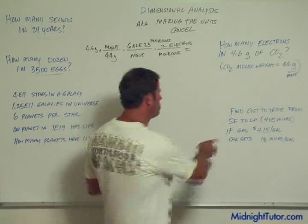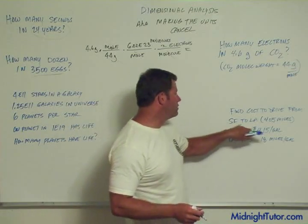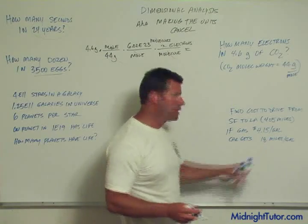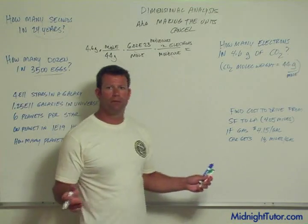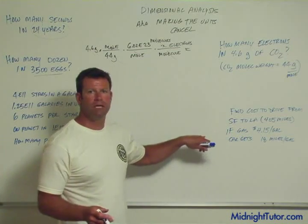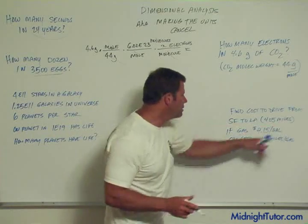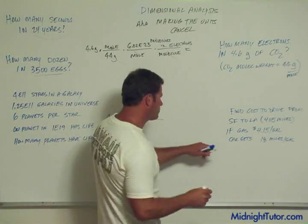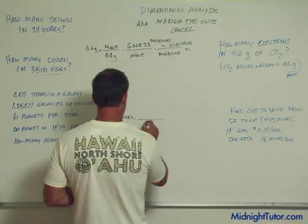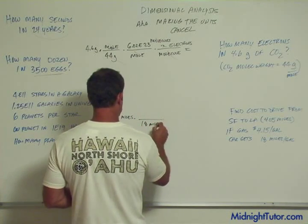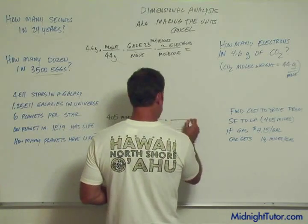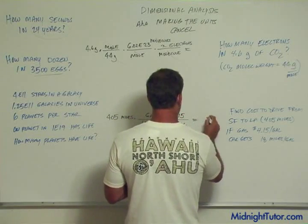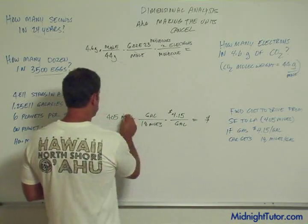Now the cost problem: drive from San Francisco to LA, 405 miles, gas at $4.15 a gallon, car gets 18 miles per gallon. What do you start with? The only value not already presented as a ratio is the distance, so start with 405 miles. Multiply by 1 gallon per 18 miles, then by $4.15 per gallon. That gives us dollars — the miles cancel, the gallons cancel.